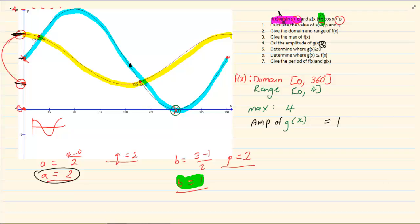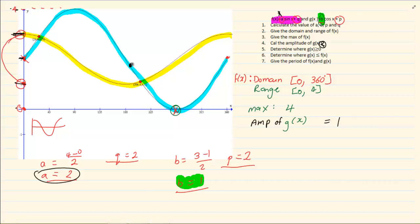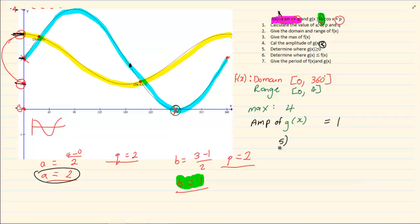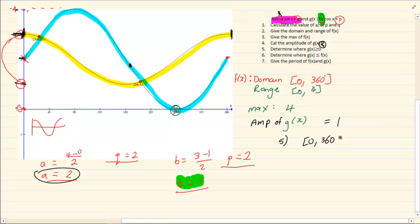To determine where g of x is greater than or equal to 0: greater than 0 means the y-value is positive. The entire g of x is above the x-axis, so it is greater than 0 from 0 to 360 degrees. The answer is in terms of x-values. Square brackets are used because the inequality has a line under it — if it were a strict inequality, round brackets would be used.